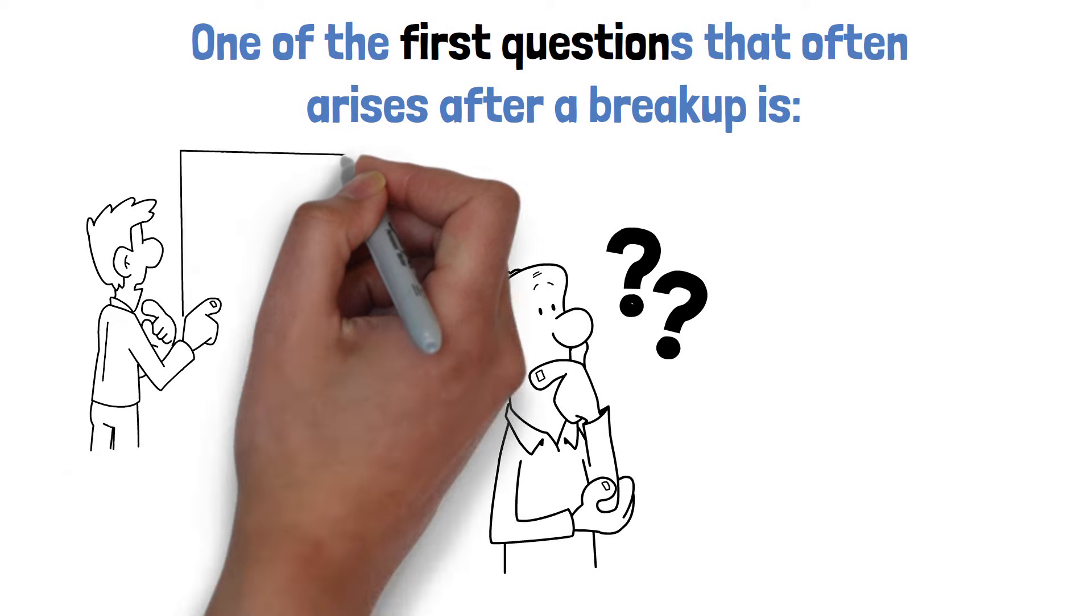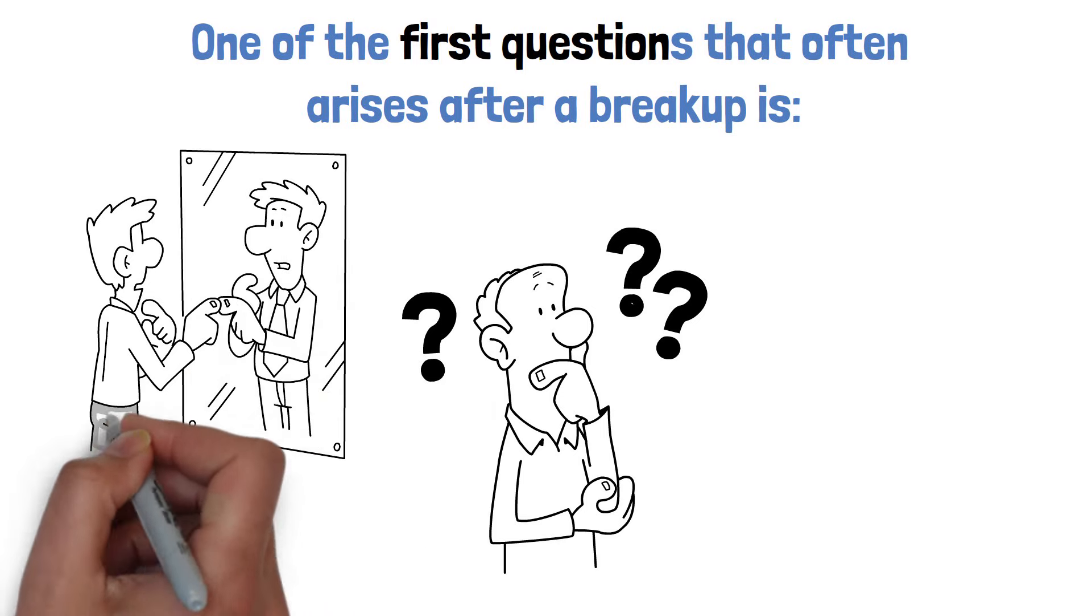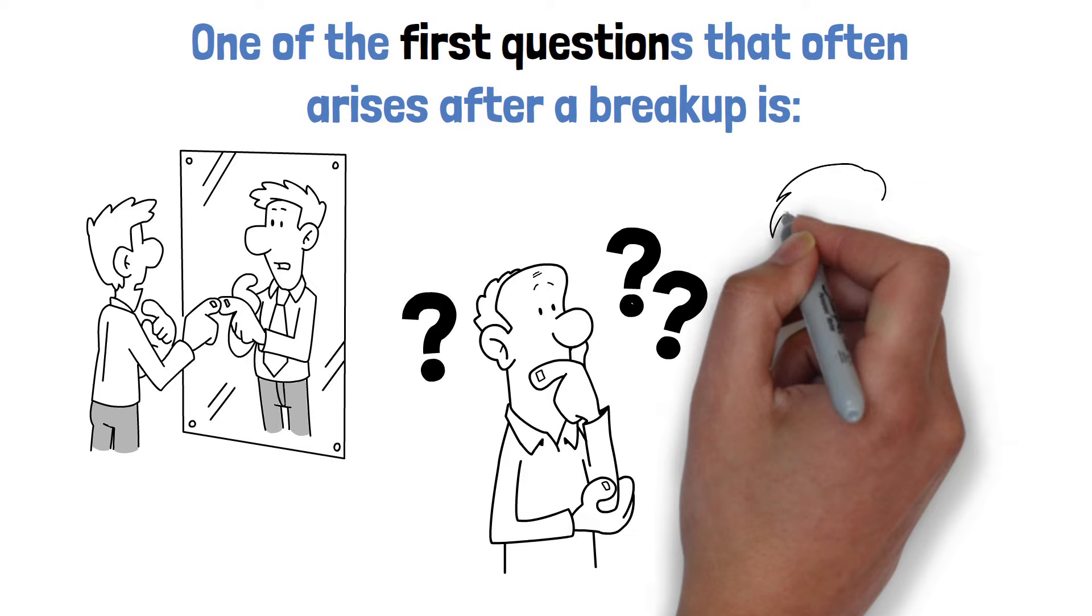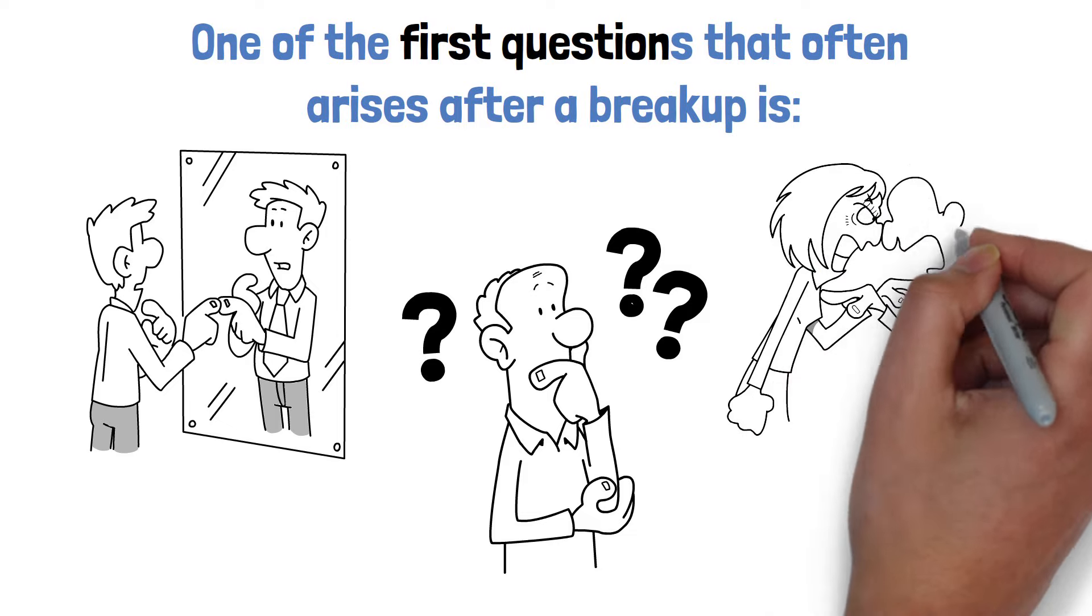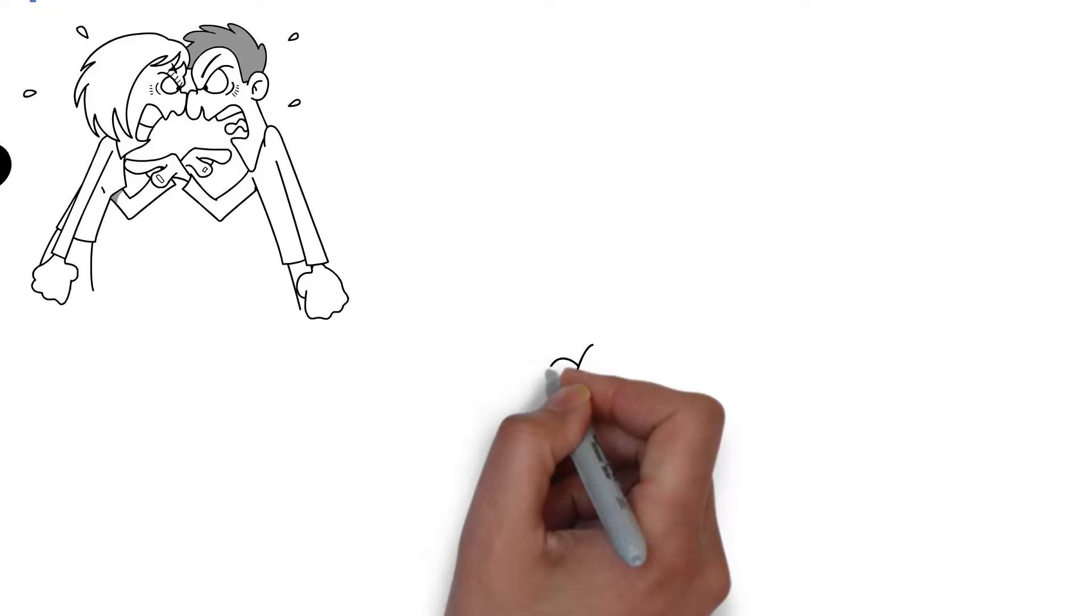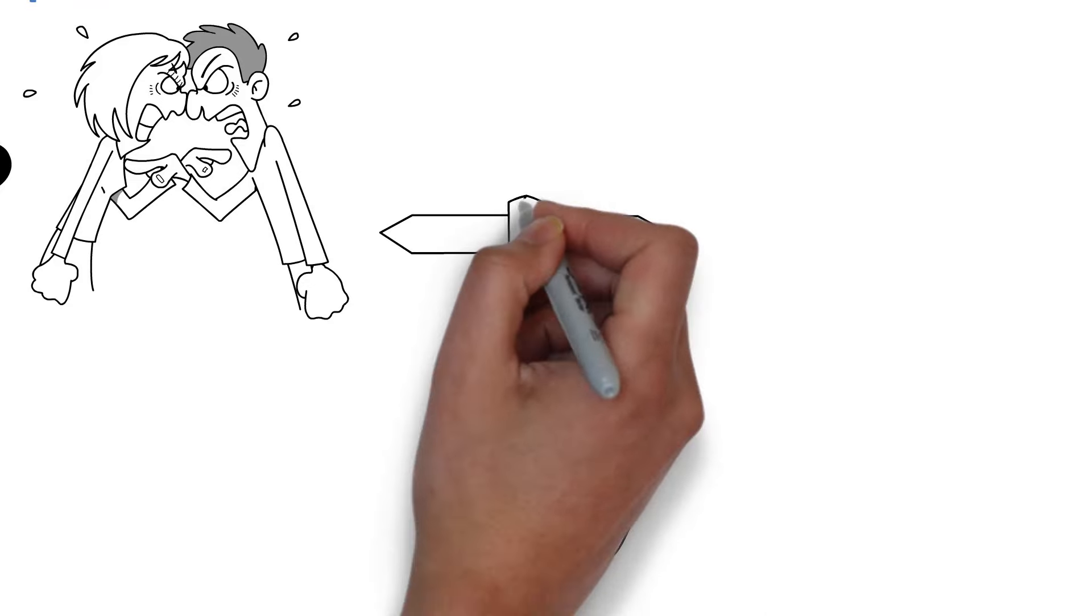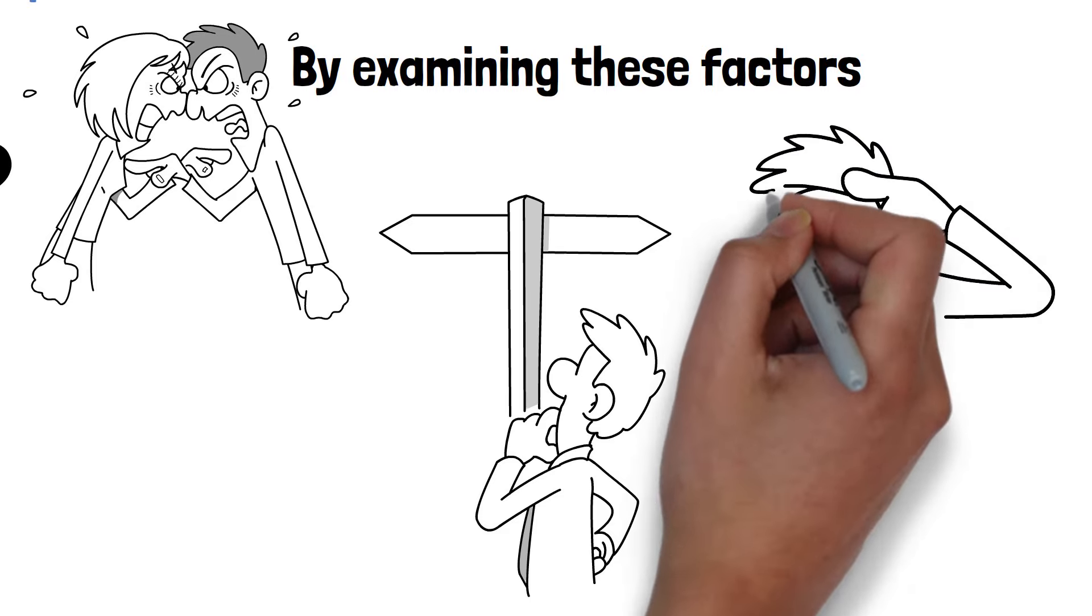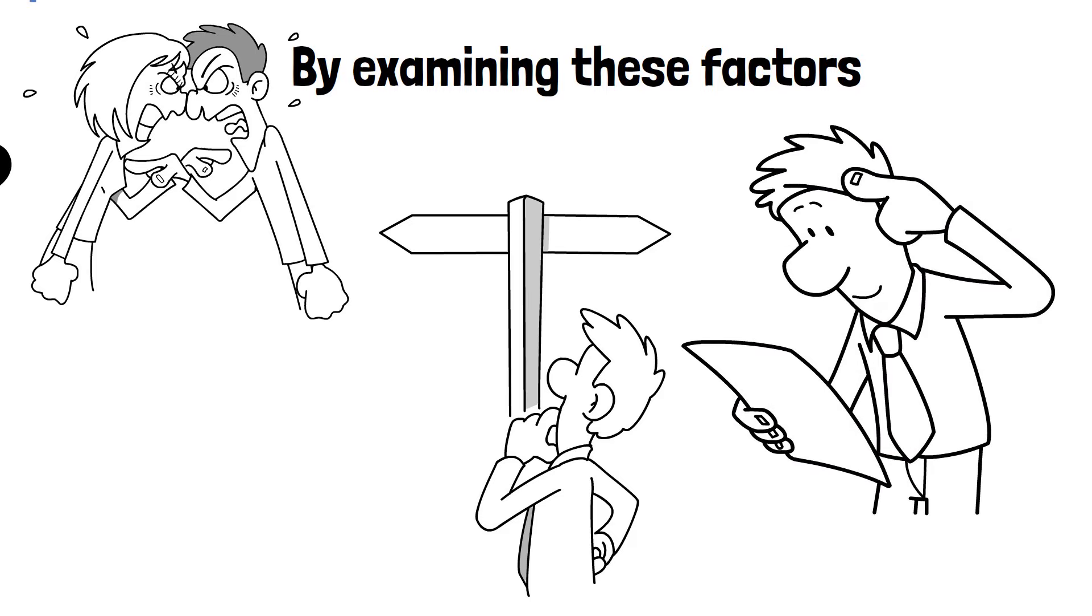Understanding the reasons behind the breakup is crucial for healing and growth. When we take the time to reflect on why the relationship ended, we gain valuable insights into ourselves and our dynamics with our partner. Perhaps it was due to incompatible goals, communication breakdowns, or unresolved conflicts. Or maybe the relationship just ran its course and both parties grew in different directions. By examining these factors, we not only gain closure but also learn valuable lessons that can guide us in future relationships.